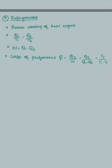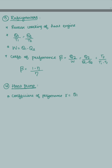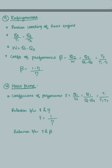The relation between β and η is: β = (1 − η)/η, where β is the coefficient of performance of the refrigerator and η is the efficiency of the heat engine. Coming to the last part of the chapter, the heat pump: its coefficient of performance denoted by r equals Q1/W, also written as Q1/(Q1 − Q2) or T1/(T1 − T2). The relation between r and η is r = 1/η, and the relation between r and β is r = 1 + β. With this, we come to the end of the chapter. I hope it was clear — thank you for watching.